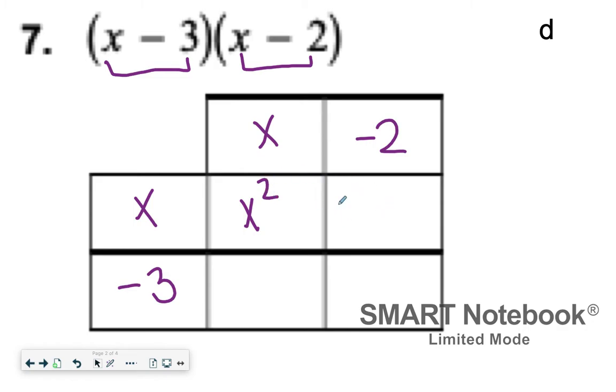And then you just keep moving across. You can either move across or down and up. And then I'll do X times negative two. That's going to give me negative two X. And then down here, I would get negative three times X, which is negative three X. And then the negative three times negative two would be a positive six.